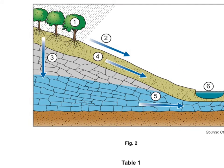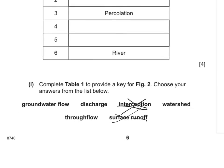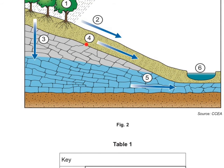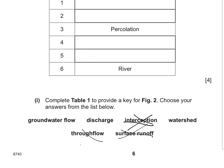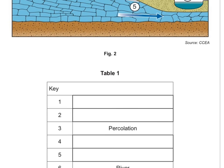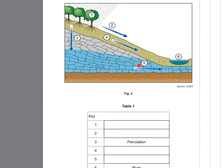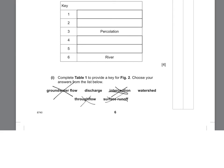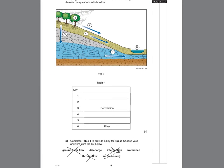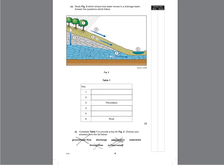Number three is percolation. The soil layer is the greeny colour and this is the rock layer, so this arrow represents percolation — water moving from the soil layer into the rock layer. Number four is represented by this arrow: water which is in the soil layer and moving through the soil layer, so that is throughflow. Number five — we're in the rock layer and moving the water, so that's groundwater flow. Discharge and watershed are not used for this answer. Quite a straightforward diagram, and you can see that our notes match this.